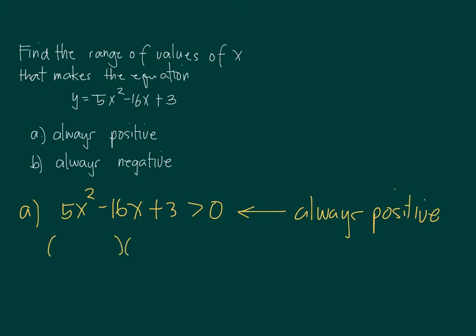We first factor the left side of the inequality, since it is already 0 on the other side. You have to work on the numbers. Just make sure that you pick the right factors. Sometimes you need to do some trial and error. For 5x squared, I can have 5x and x. For 3, I need to create a 16, so I have to place 3 here, and then 1 on the 5x. Since I need a negative 16x and I need positive 3, so 1 and 3 should have the same signs, and they have to be both negative.